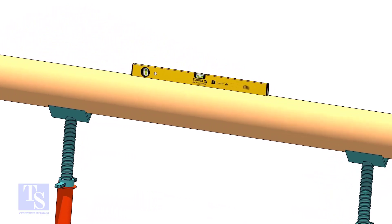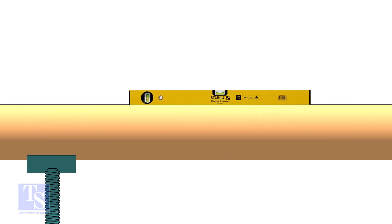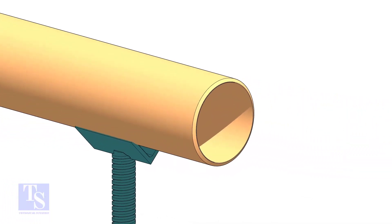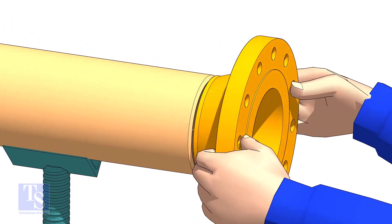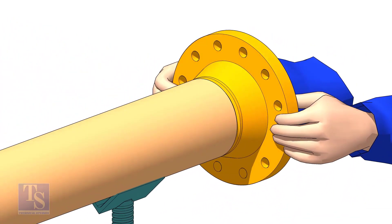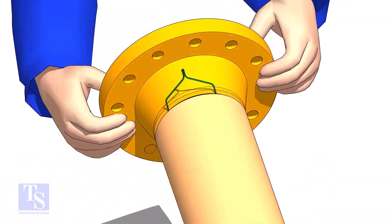Level the pipe. Hold the flange on the pipe face as shown. Put the gap rod in the joint. Look through the flange and the pipe, and adjust the overlap.